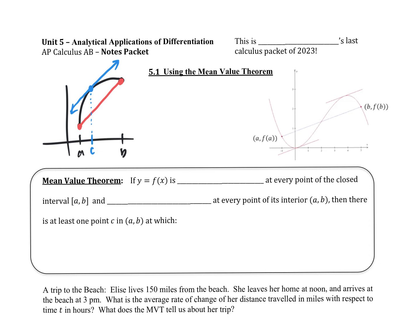Let me say this one more time. The blue line is called a tangent line. They're saying the tangent line, or the derivative, is going to have the same slope — it's going to be parallel to the average slope. That's what the mean value theorem says.